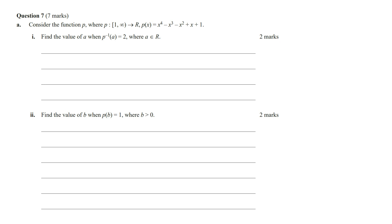Consider the function p where p is defined by the given rule. Find the value of a when p inverse of a is equal to 2, where a is a real number. If p inverse of a is equal to 2, then we can say that p of 2 is going to equal a.